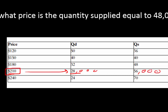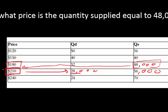For part B: at what price is the quantity supplied equal to 48,000? We just go up to the next row — this is where quantity supplied is 48,000. Looking all the way over to the price column, that's at a price of $180.